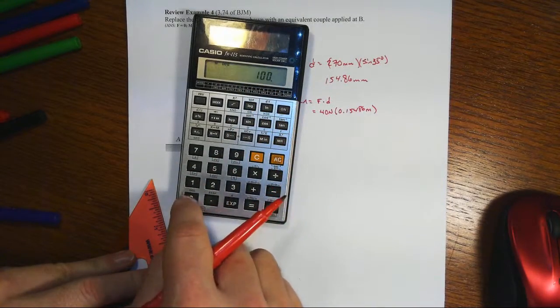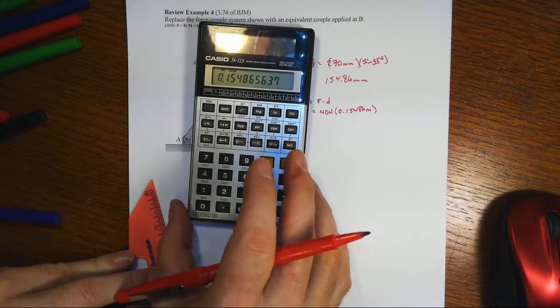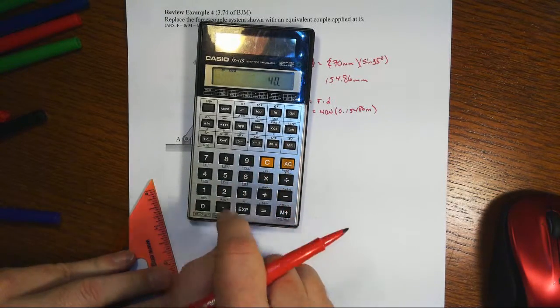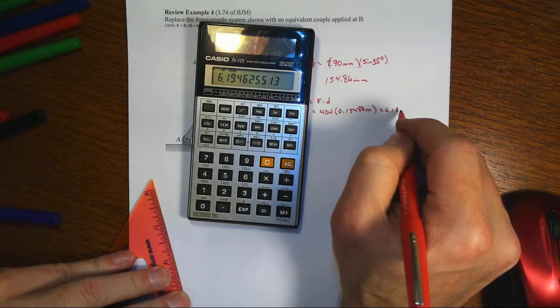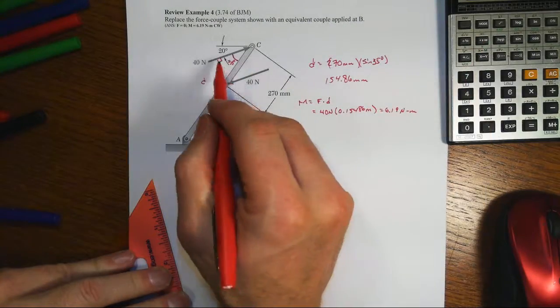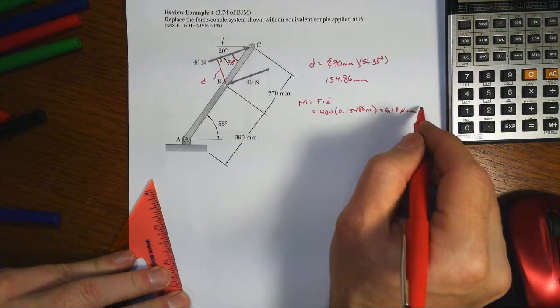So I converted millimeters into meters and then times the 40, and we get 6.19 newton meters for the moment. Note that that's acting in a clockwise fashion.